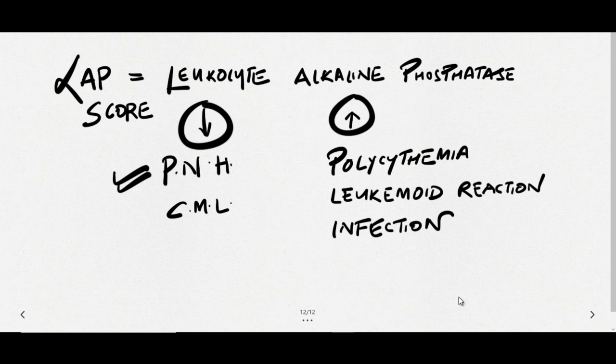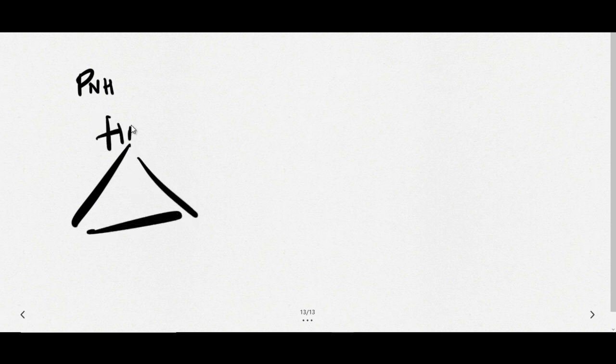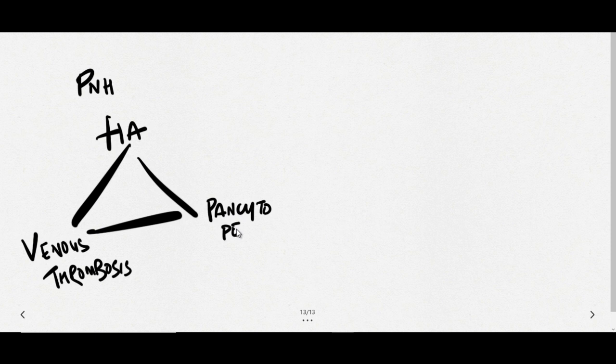Now we know that paroxysmal nocturnal hemoglobinuria is actually an acquired clonal disease. It is associated with abnormal complement regulation. There are three main features: hemolytic anemia, venous thrombosis, and deficient hematopoiesis. You can say it is a triad. These are the main features: hemolytic anemia, venous thrombosis, and pancytopenia.